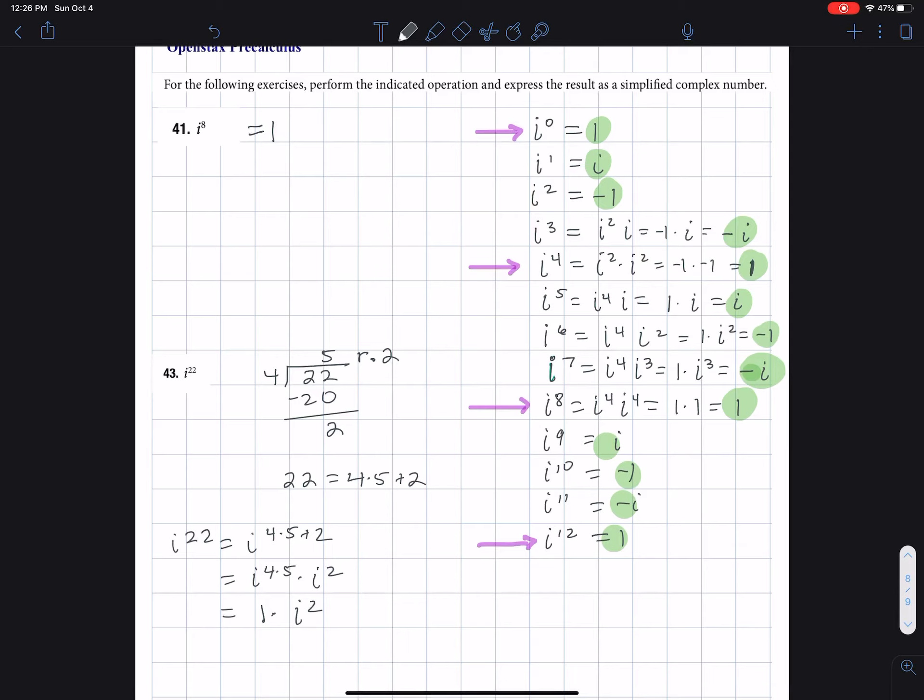Now look, much of this could have been done in our head. Four goes into 22 five times, but the remainder is two. So instead of doing all this work here, I can just say that i to the 22 is i squared, because what I'm looking at is the remainder.